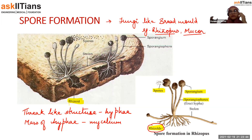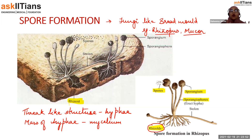If conditions are conducive — like the right amount of humidity, temperature, warmth, and everything — then the fungi will spread even faster.